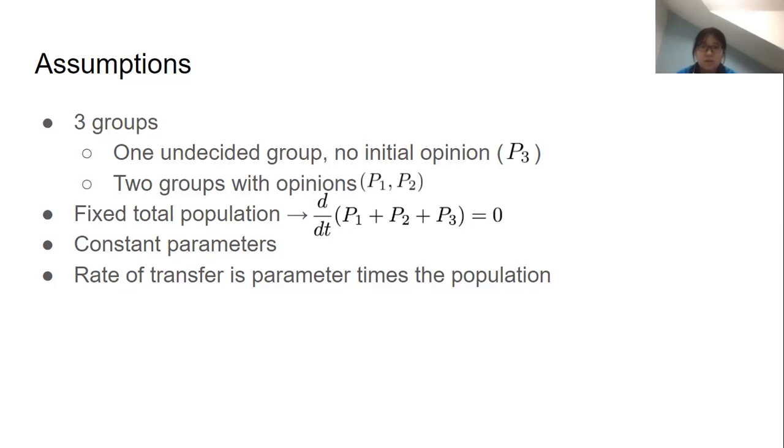We also assume that the three groups represent our population on social media, meaning that the total population of the three groups together shouldn't actually change. In equation form this looks like d/dt(P1 + P2 + P3) = 0. We also assume constant parameters, and we define the rate of transfer as parameter times the population of other groups we're interested in.